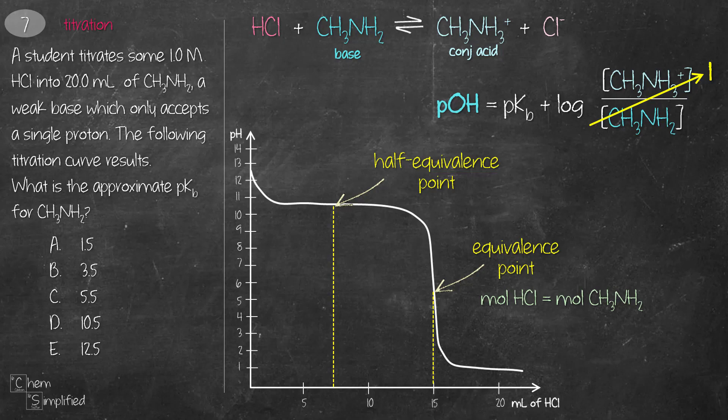Now that means, if we look at this Henderson-Hasselbalch equation, this quotient will then become 1. That translates to pKb of CH3NH2 is equal to pOH of the solution, because this whole log term is going to be equal 0, because log of 1 is 0. Now the pH at half equivalent point is 10.5. And if we want to find pOH, all we have to do is just subtract 10.5 from 14, and that gives us 3.5 as the correct answer.